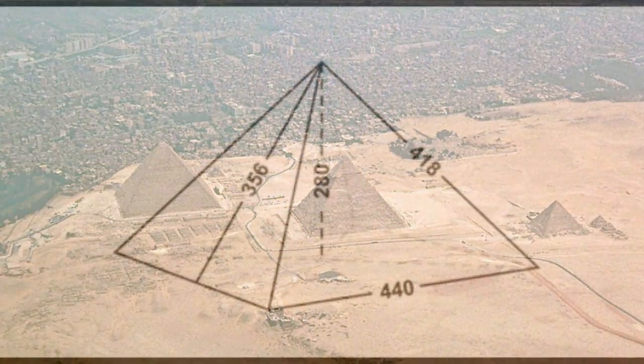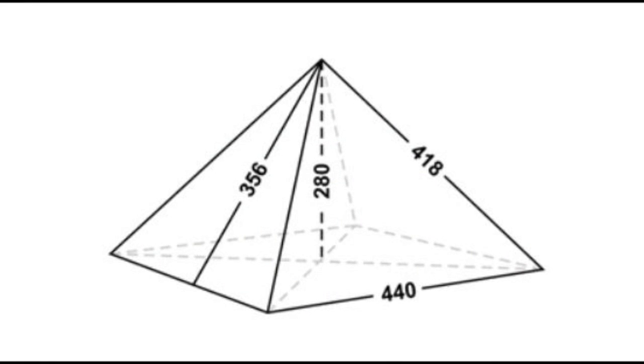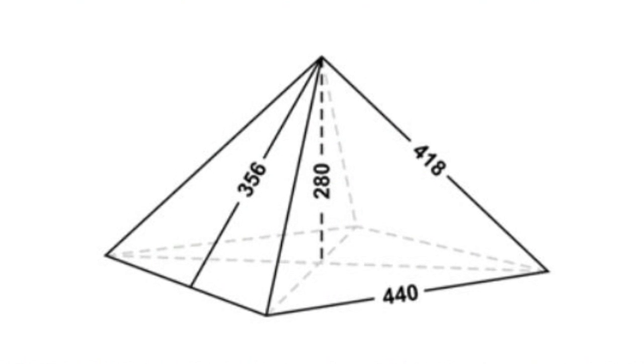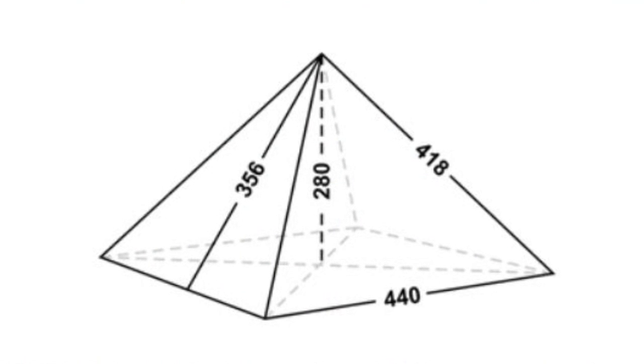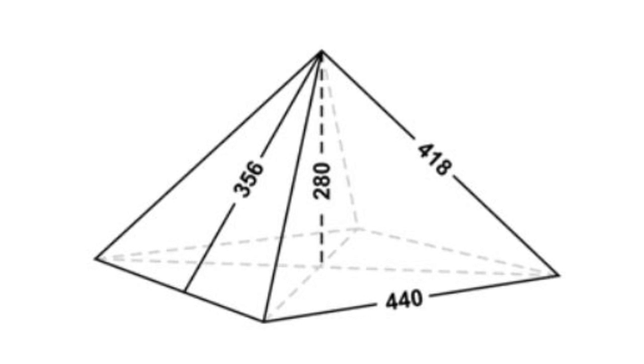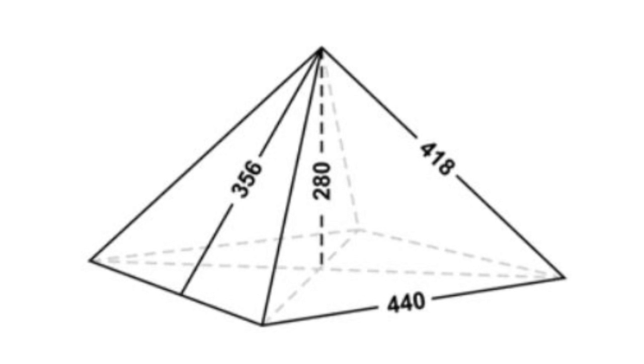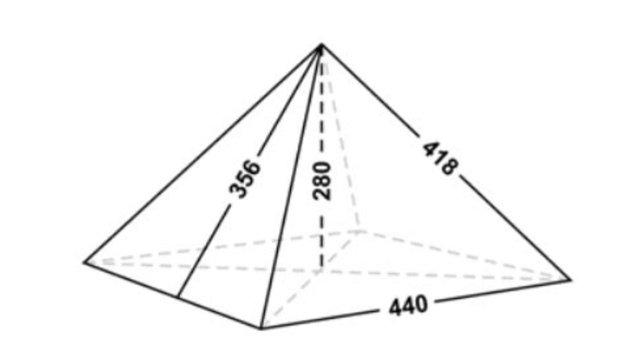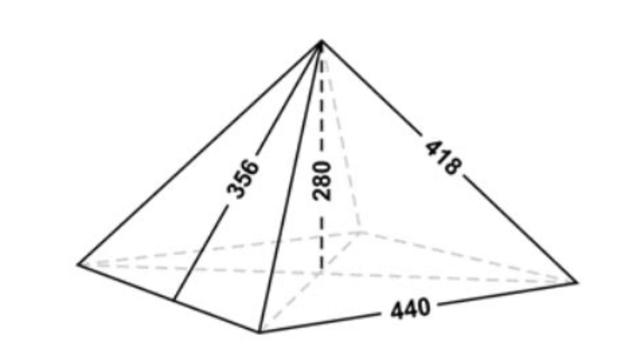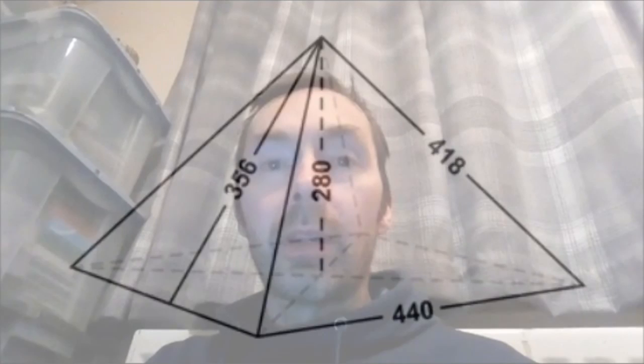Before the casing stones were removed, the original height was 280 cubits, and each base length was 440 cubits. When talking about this pyramid, those are the two most significant measurements. So what happens if we add them together? We get 720!